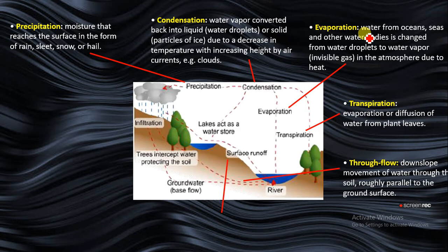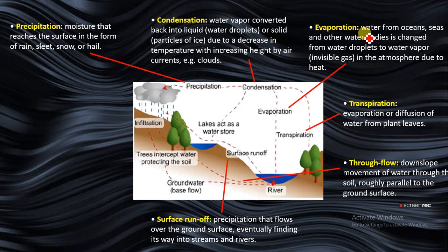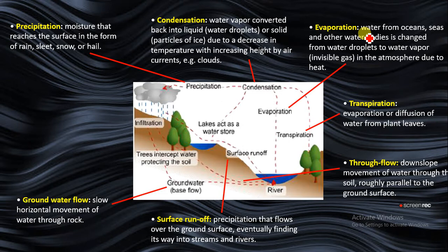Surface flow has to do with surface runoff, precipitation that flows over the ground surface, eventually finding its way into streams and rivers. Groundwater flow, sometimes called base flow, is the slow horizontal movement of water through rocks.